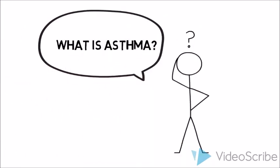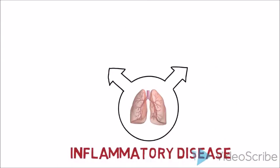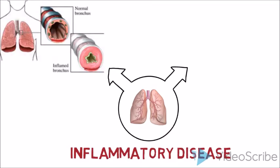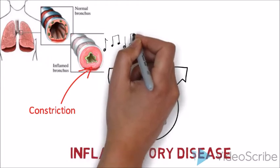But what is asthma? Asthma is a long-term inflammatory disease affecting the airways. An asthmatic trigger can result in the narrowing of the airway due to the thickening of the bronchial wall and constriction of the smooth muscles. This produces a whistling sound known as wheezing.